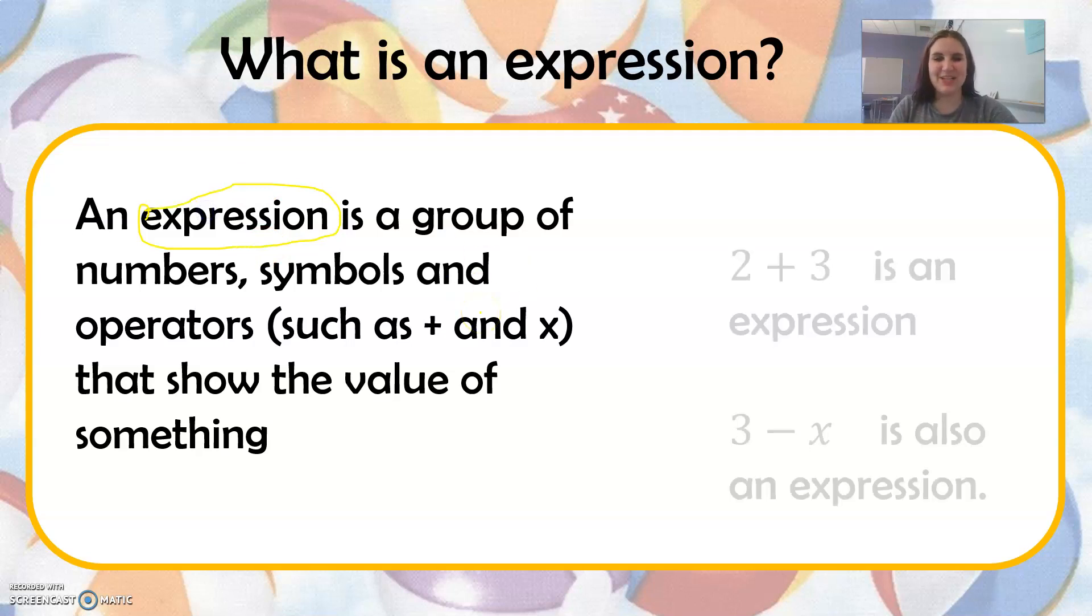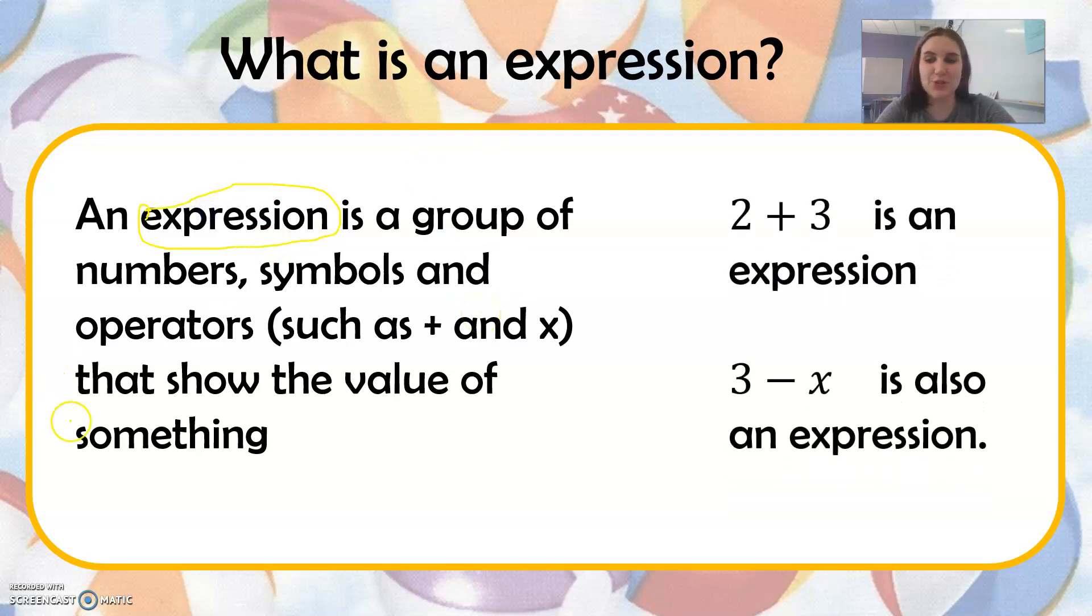An expression. Here are some examples. 2 plus 3 is an expression, because that's numbers and an operator, the plus sign. 3 minus x is also an expression. That symbol x is called a variable, and we'll talk about that. These are expressions that show the value of something.